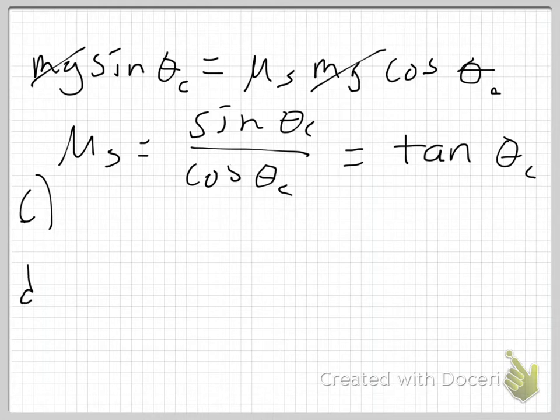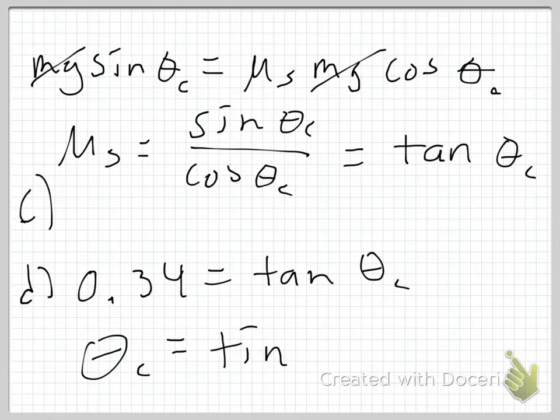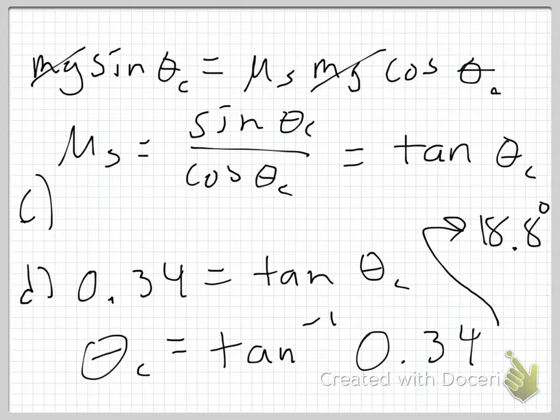Now I'm going to calculate it for mu static equals 0.34. So to do that, I would say 0.34 is equal to the tangent of theta critical. So then the critical angle theta equals the inverse tangent or the arctangent of 0.34. When I run those numbers, not that that's important, I mean it's important, but not that that's the most important thing, I get that that's 18.8 degrees, or somewhere around there.